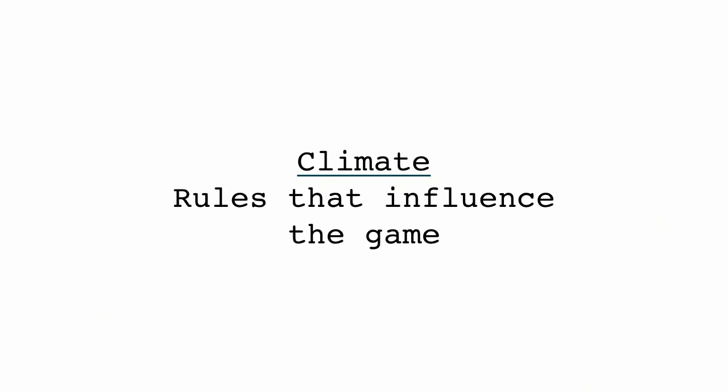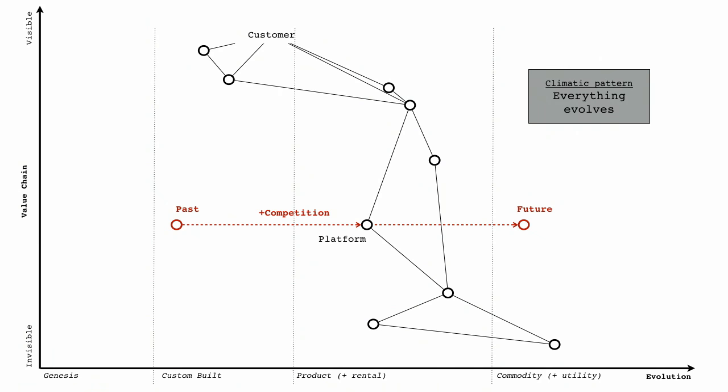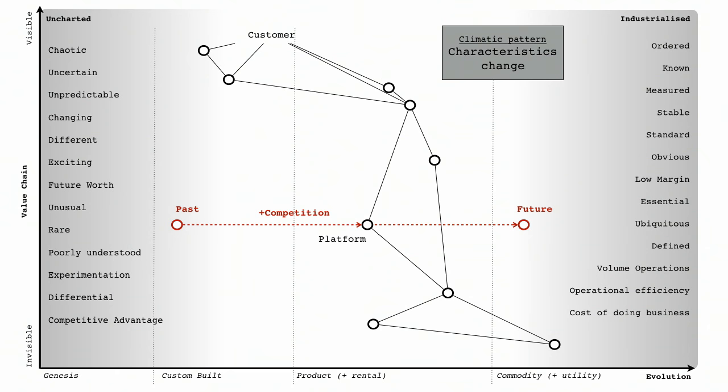So I thought, well, hang on a minute. I want to be over here. That means I need to understand, A, the fact that strategy is a cycle, that I need to observe the landscape, learn about climatic patterns, orientate around it, and then get into context-specific play, which means I need to first understand the landscape with a map. A map needs an anchor, so that was users and user needs. I need position relative to an anchor, so that's my value chain. I add in evolution. I now have a map. It is 2005, and I went to other people and said, look at this. Isn't it exciting? And they went, so what? Well, now I have a map, I can start to observe climatic impacts. So these are the rules that influence the game. The first one I noticed was that everything evolves. Due to supply and demand competition, it's all moving from left to right. The next one is the characteristics change as it evolves. It starts off in this uncharted space where it's chaotic, uncertain, poorly understood, changing, different, exciting, and a source of future worth. And over an unknown amount of time, it becomes industrialized, ordered, standard, stable, measured, dull, boring. This is known as the Salomon and Story innovation paradox of 2002.